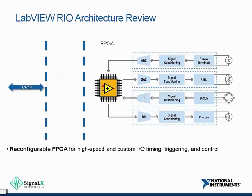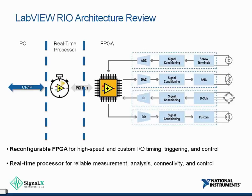The FPGA typically talks over a high-speed bus to a real-time processor in an integrated system. That real-time processor is also capable of control, perhaps at the millisecond level, with a level of determinism as well. It brings additional capability for more sophisticated analysis, connectivity over networks, and control. Generally, the real-time processor talks to some sort of networked application — a PC or another real-time processor serving as a central data collector.